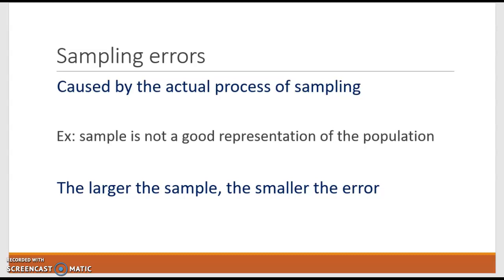That would be a sampling error—the process itself is what's problematic. We also like to say the larger the sample, the smaller the error. If you're dealing with a very large sample size, there's probably a better chance you're going to have a wider variety of who you're talking to, and you're going to get a better representation.